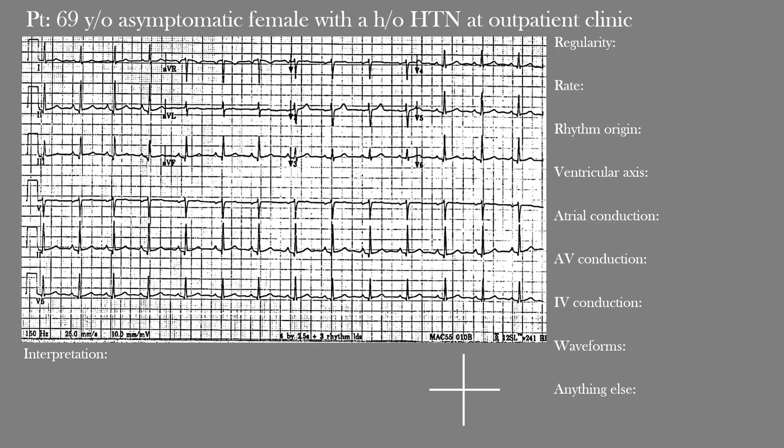We want to determine the rate of the rhythm. Then we have the rhythm origin — where is the rhythm actually starting from within the heart? Then we find the ventricular or QRS axis, which can help with our differential diagnosis. Then there's atrial, atrioventricular, and intraventricular conduction — we look to see if it's normal or prolonged. Then we have the waveforms, including all waves, segments, and intervals, and lastly anything else we may have missed.